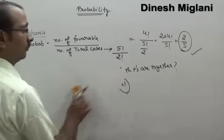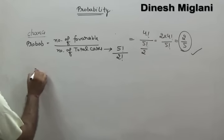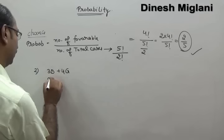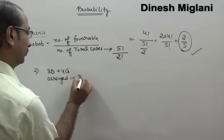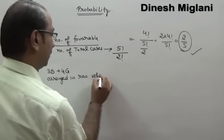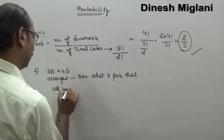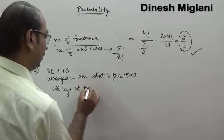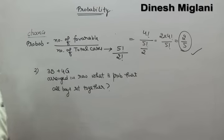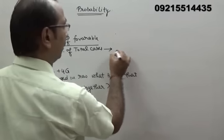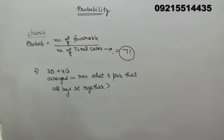Similarly, take one more example. It is given that we have 3 boys and 4 girls who have to be arranged in a row. What is the probability that all boys sit together? Total number of persons is 7, so total cases = 7 factorial. For favorable cases, since all boys are together, I will make a single group of the 3 boys, giving 4 girls plus 1 group — 5 units total.